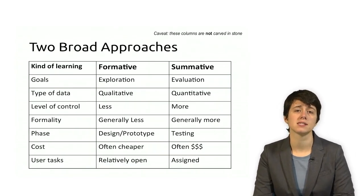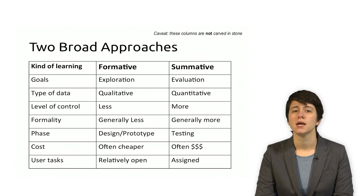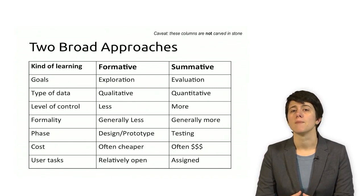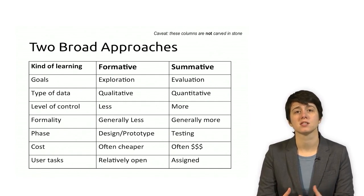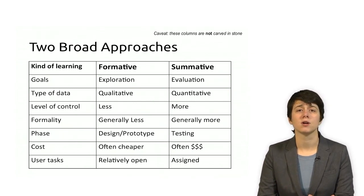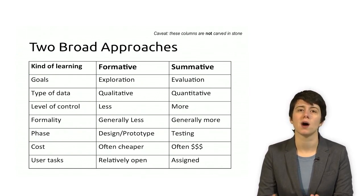Now, I promised that we would come back to this table, which contrasts the two types of evaluation. In a formative study, you really want to just explore your system. You're frequently getting qualitative, rich data because you're not really sure exactly where you want to go with the data or what you want to prove yet. You typically control less about what the user does because you want to understand their natural ways of approaching the system. It is generally less formal and you typically do this in the design or prototyping phase, because from a formative evaluation you find out ways you still want to change your system — so you might not want to do that as you're about to ship a product if you don't have an opportunity to make the changes you hope to make.